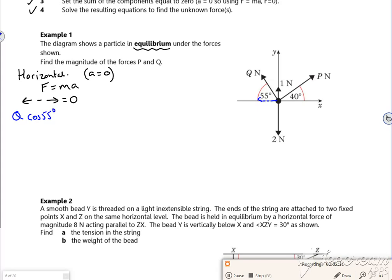There's no other forces going left, so let's look what's going right. Right, so I'm going the other way. What have we got? So it's P cos 40, and that's equal to zero.